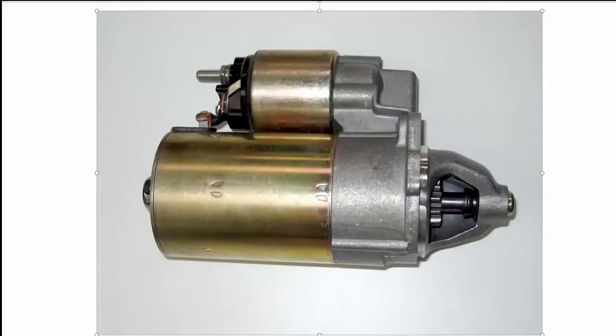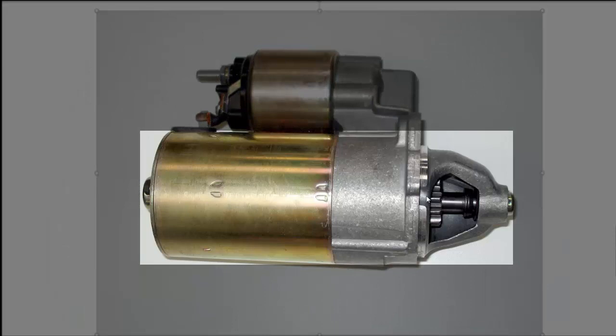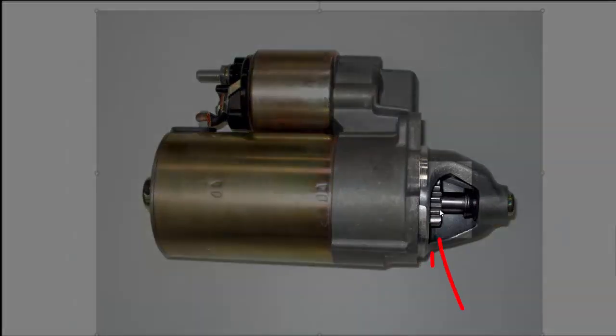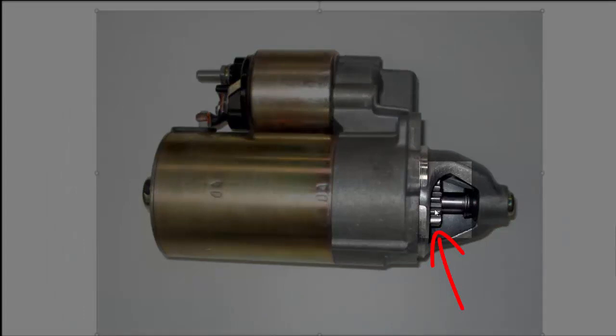The starter motor consists of several main components. We have the motor itself, which has an armature which spins inside this housing here, which goes from the front to the back here, and notice there's a gear on the front end of this armature.